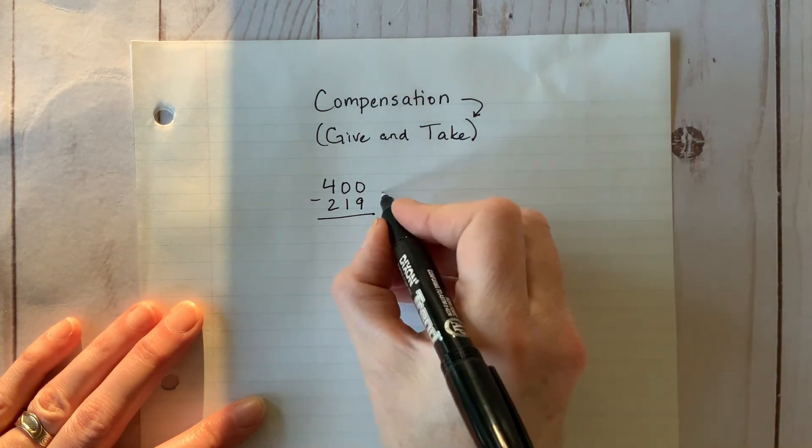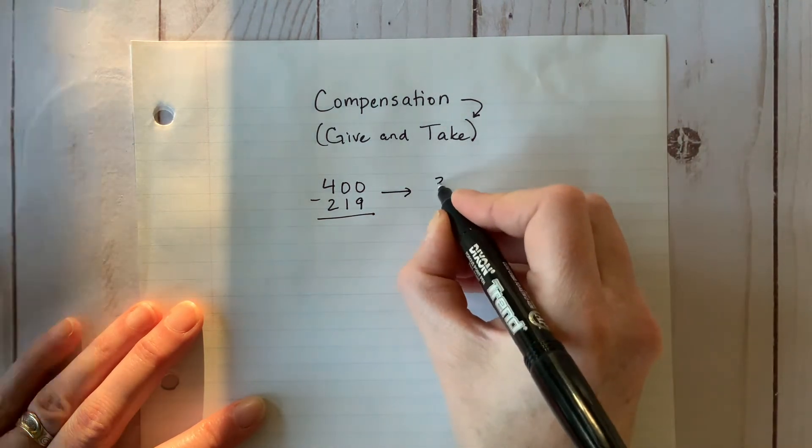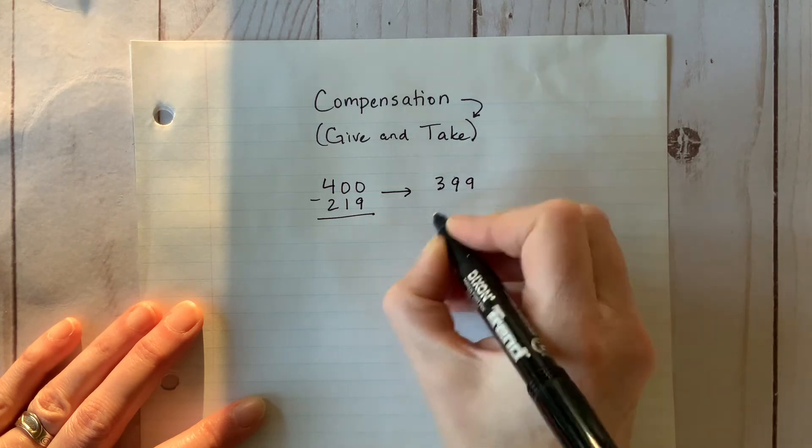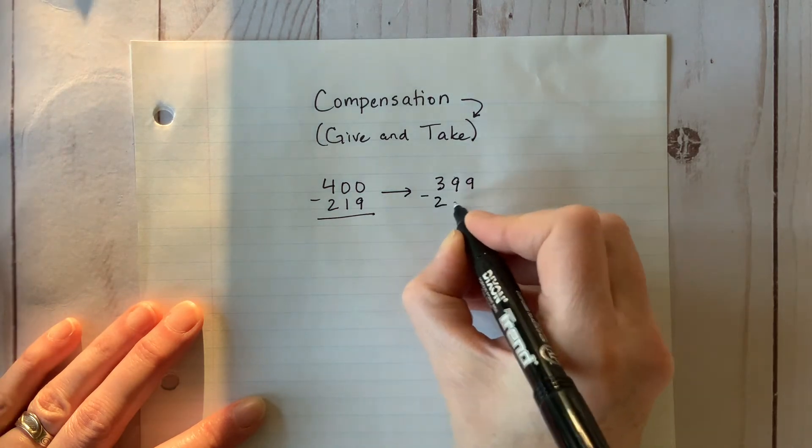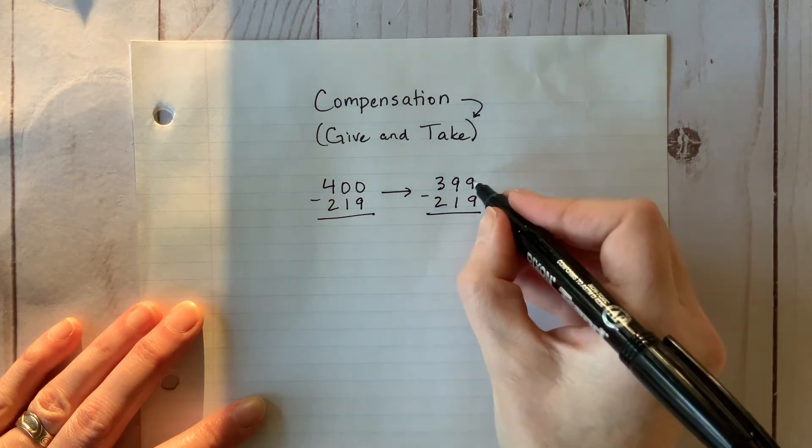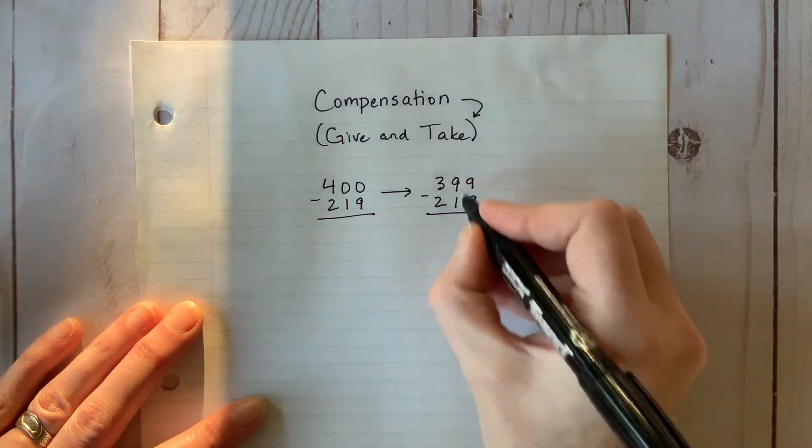The trick here is to change those pesky numbers by making them either a little bit larger or a little smaller. Now that's an easier equation to solve. Time to subtract.